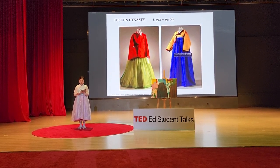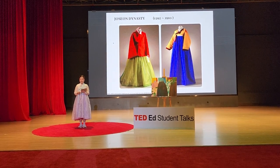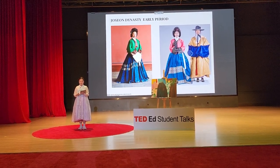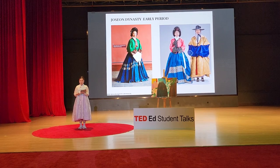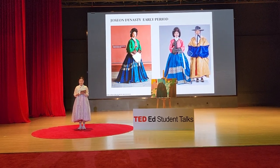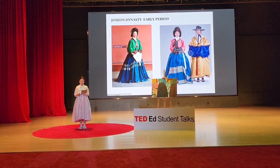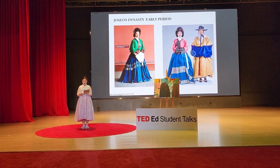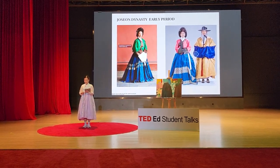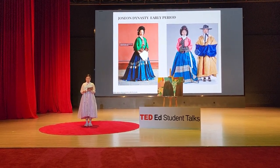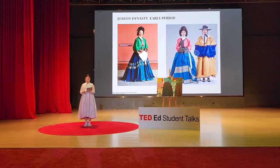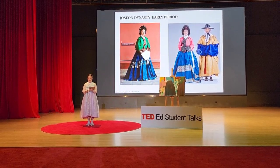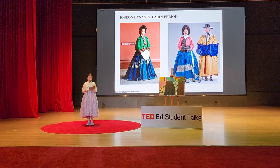The Joseon dynasty was divided into early and late periods. One of the characteristics of Hanbok is that it is long enough to cover the waist. The shape is white, covering the body completely, and the skirt is tied with a string from the waist.